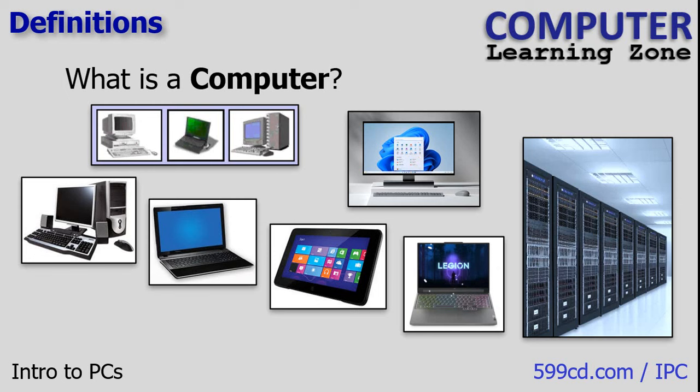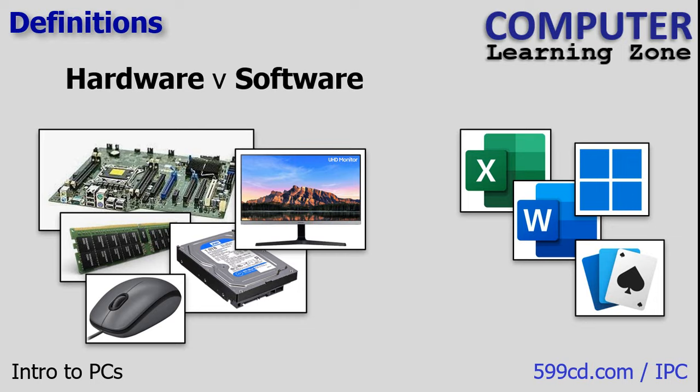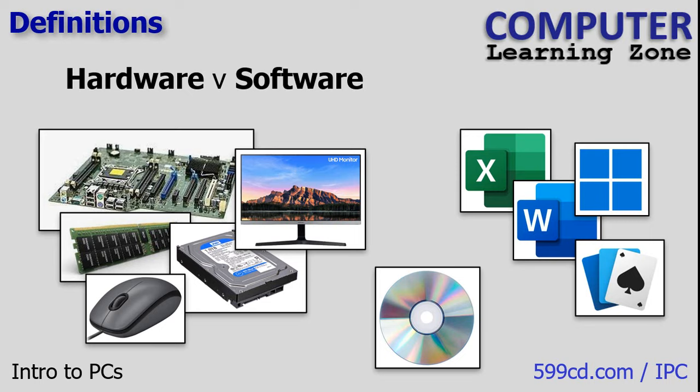Hardware versus software — essentially, if you can touch it, it's hardware. That's the general rule. Today we're going to learn about different kinds of computer hardware, like motherboards, memory chips, video cards, processors — all those things. They're physical objects you can touch. Software, on the other hand, represents computer programs like Microsoft Excel, Word, games like Solitaire, even Microsoft Windows itself. Those are applications that run on the computer hardware. CDs, for example — the actual CDs themselves are considered hardware because you can touch them, but the software on the CD, the program on the CD, is considered software.